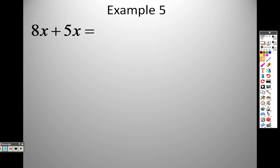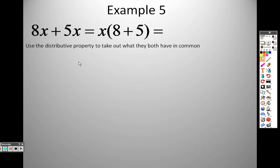When you have two terms that are alike, I have two x's there, right? I have an x and an x, but I have 8 x's and I have 5 x's. We could use the distributive property here to take out what they both have in common. And they both have an x in common, so I can pull them out and I can add those two items together. And 8 plus 5 is 13, so I get 13x.